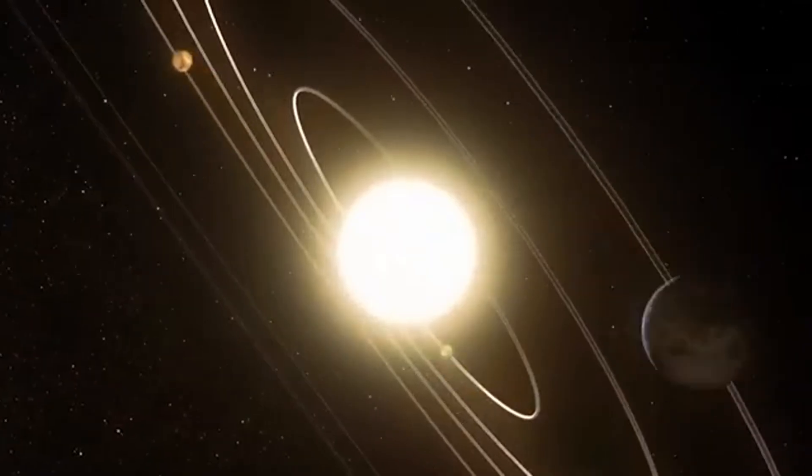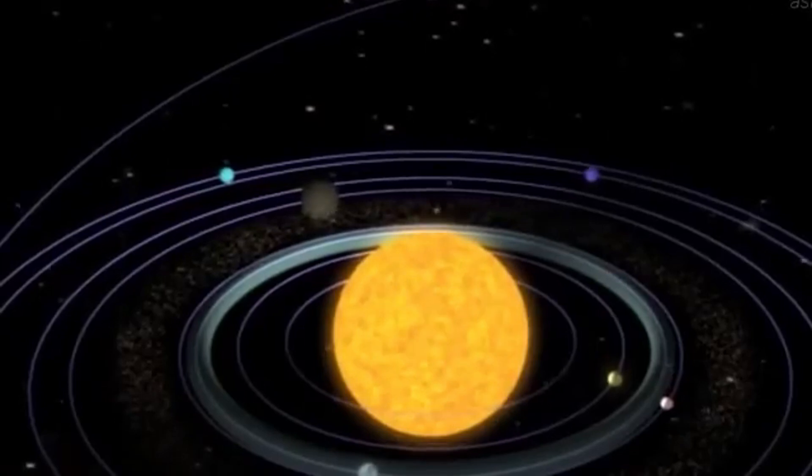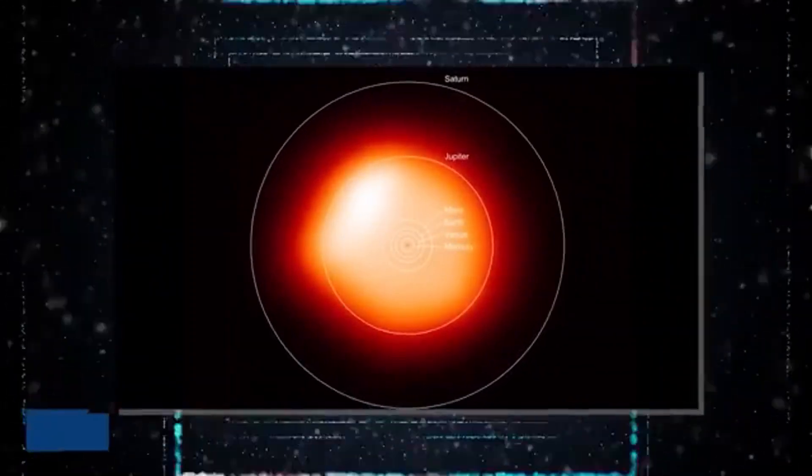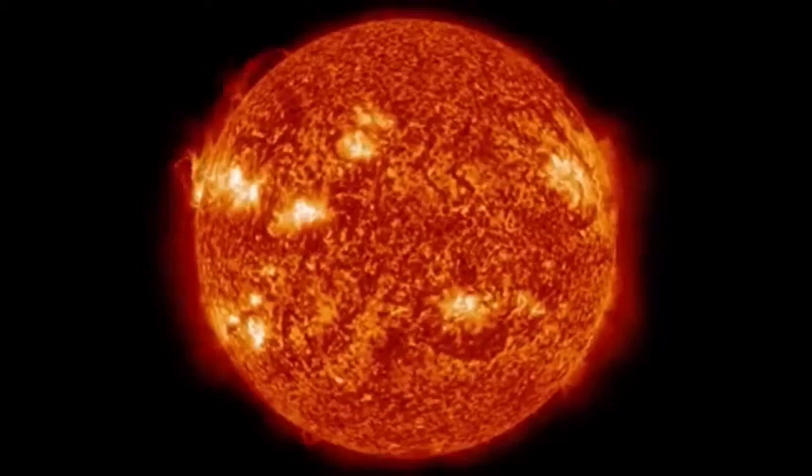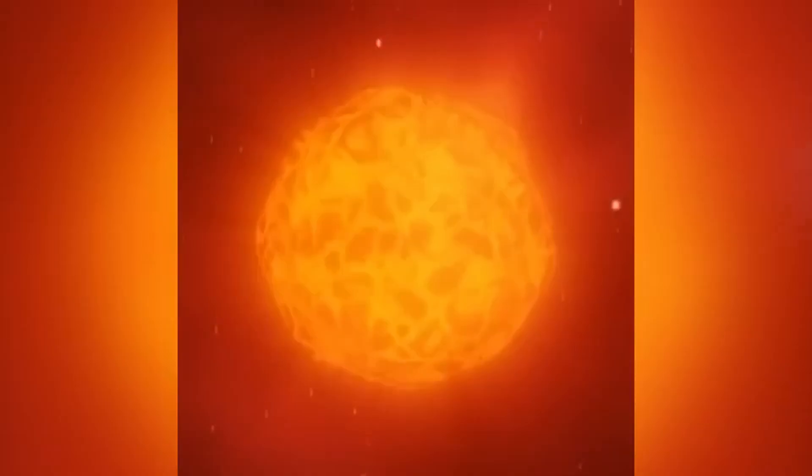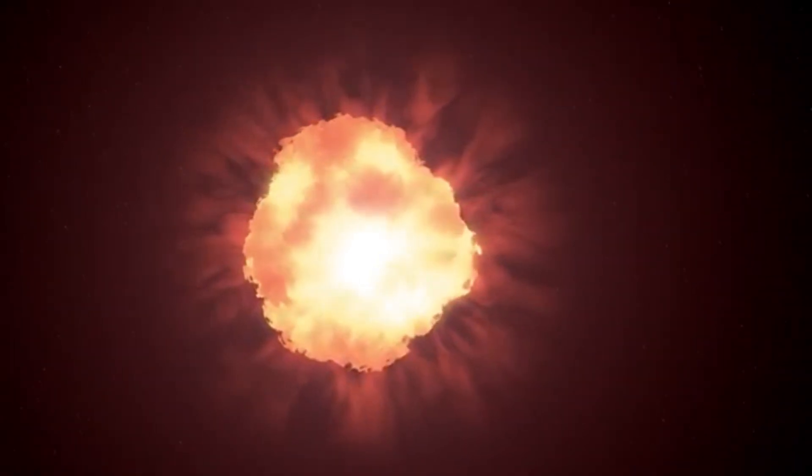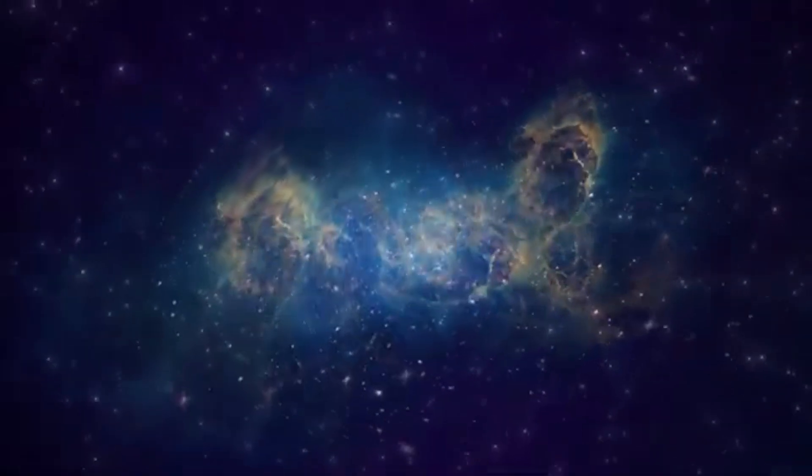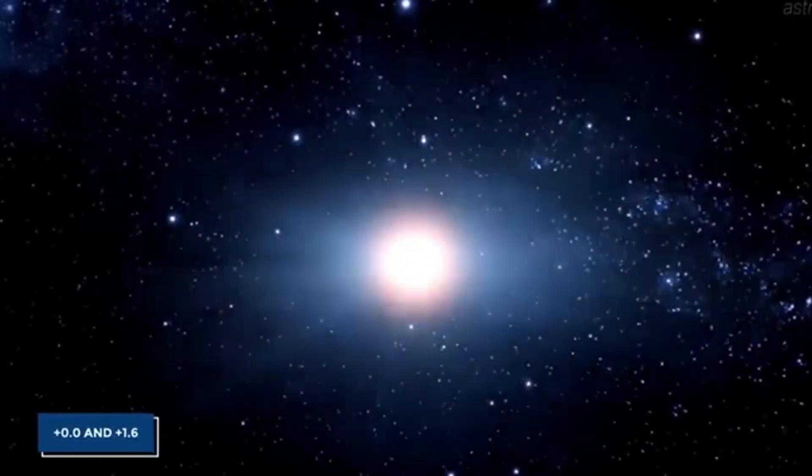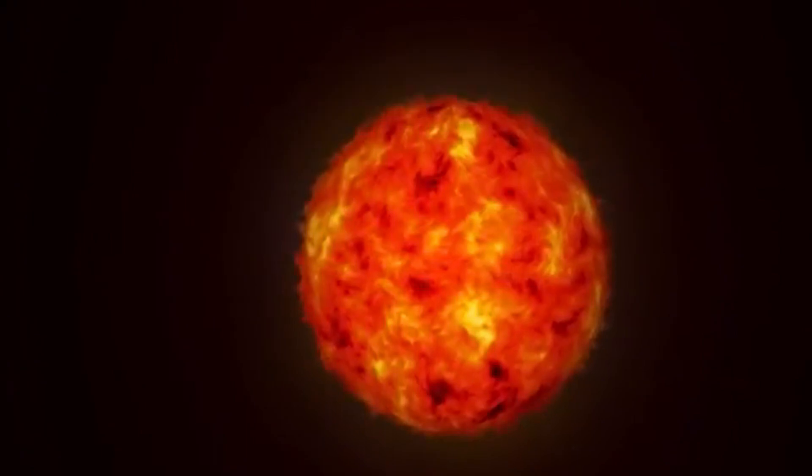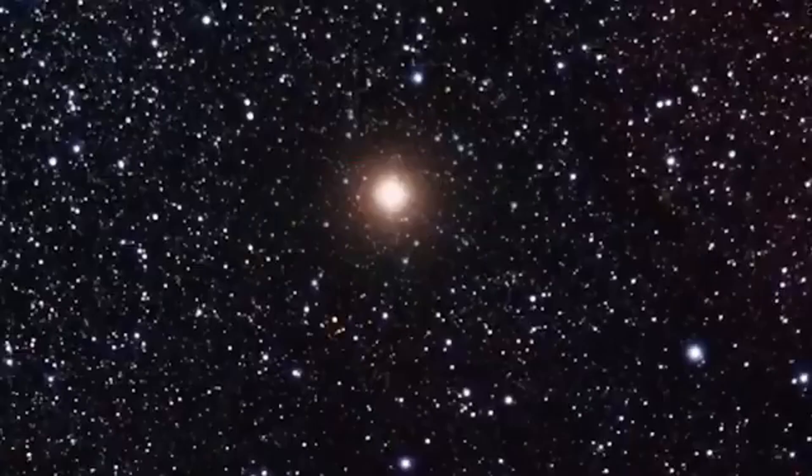Betelgeuse's distinctive reddish hue is another hallmark of its current stage. The red color is a result of its relatively cooler surface temperature compared to other stars like our Sun. While the Sun's surface temperature is about 5,500 Kelvin, Betelgeuse's cooler surface registers temperatures around 3,500 Kelvin. This cooler temperature allows Betelgeuse to emit light at wavelengths that give it a red appearance. But this color is not just a visual trait. It provides clues about the star's physical condition and the processes occurring within its vast, gaseous expanse.